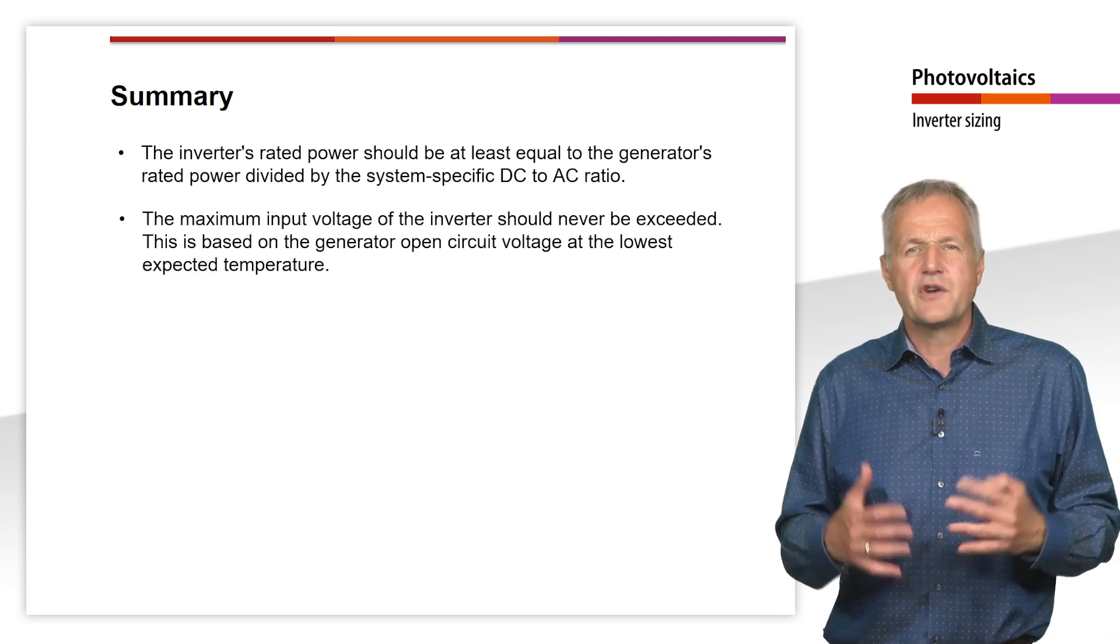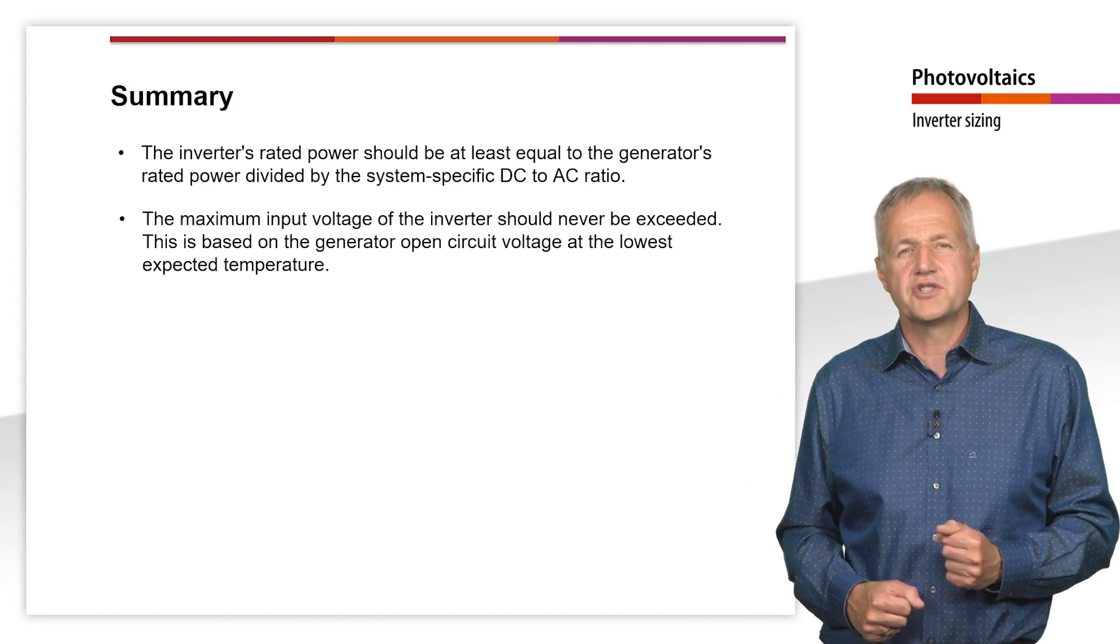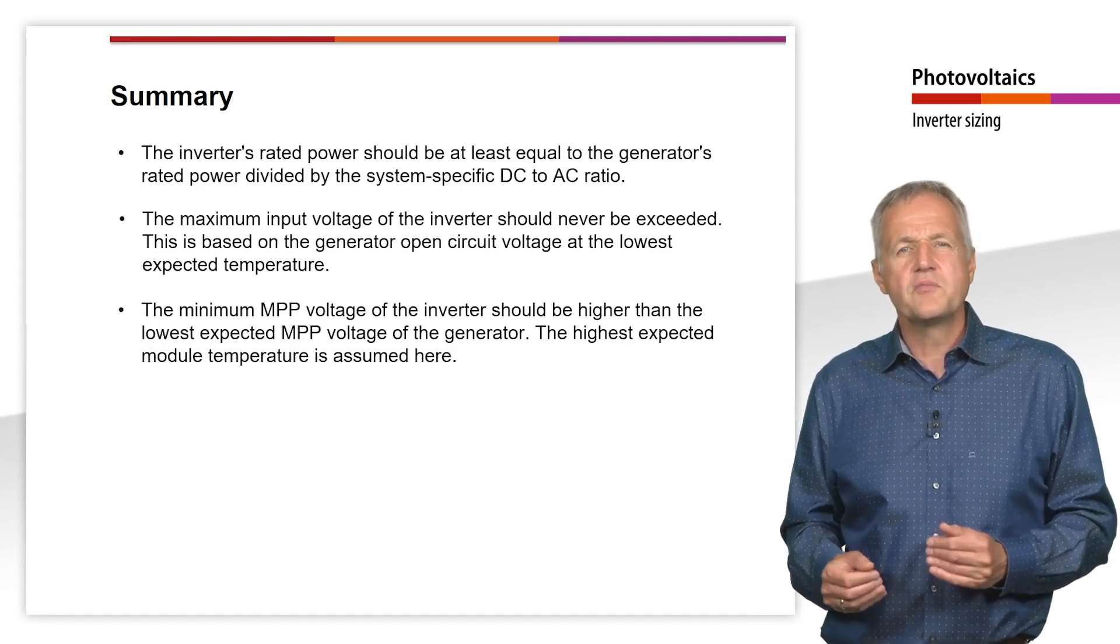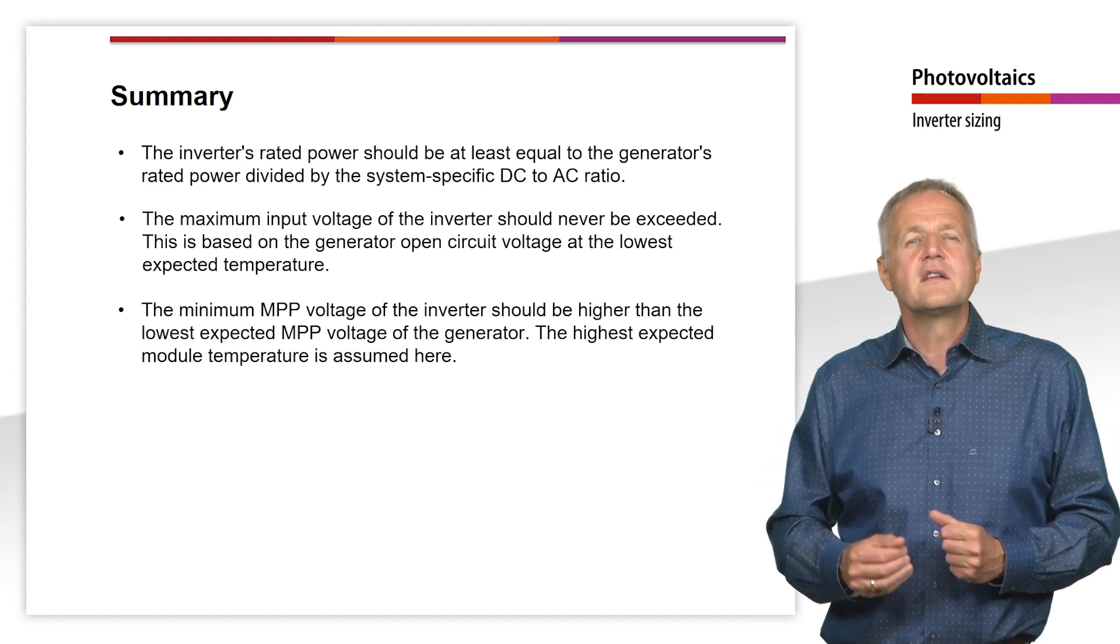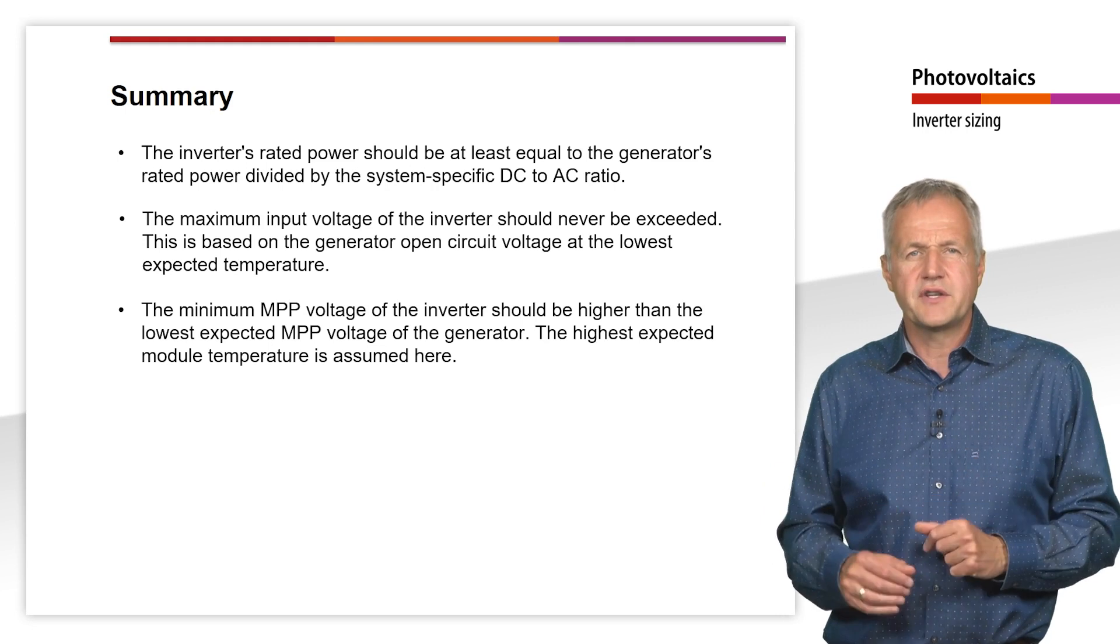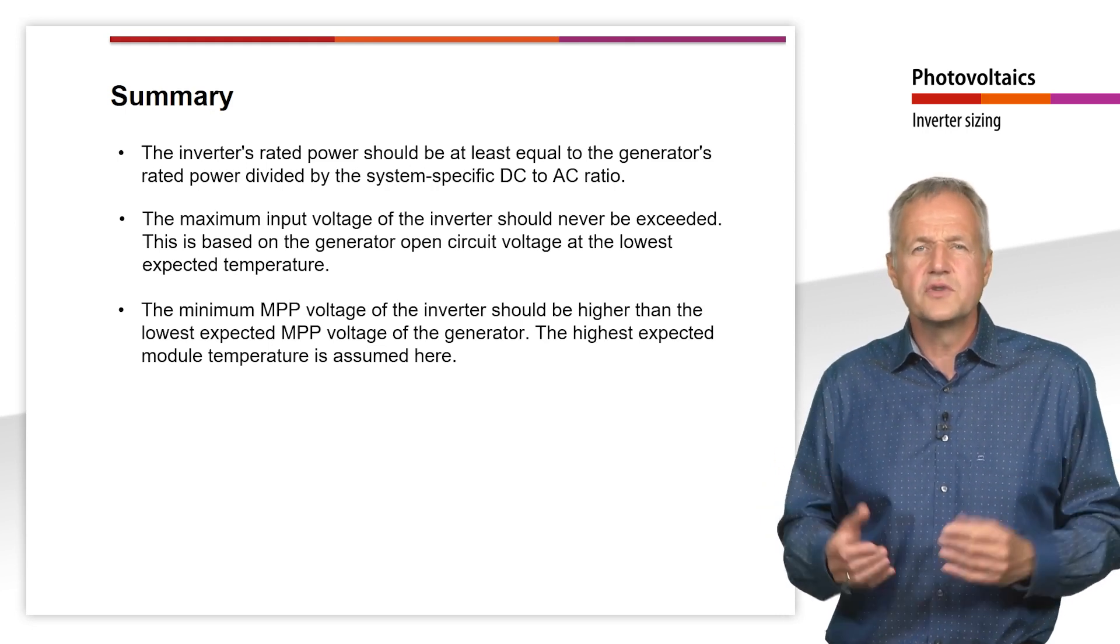This is based on the generator open circuit voltage at the lowest expected temperature. The minimum MPP voltage of the inverter should be higher than the lowest expected MPP voltage of the generator. The highest expected module temperature is assumed here.